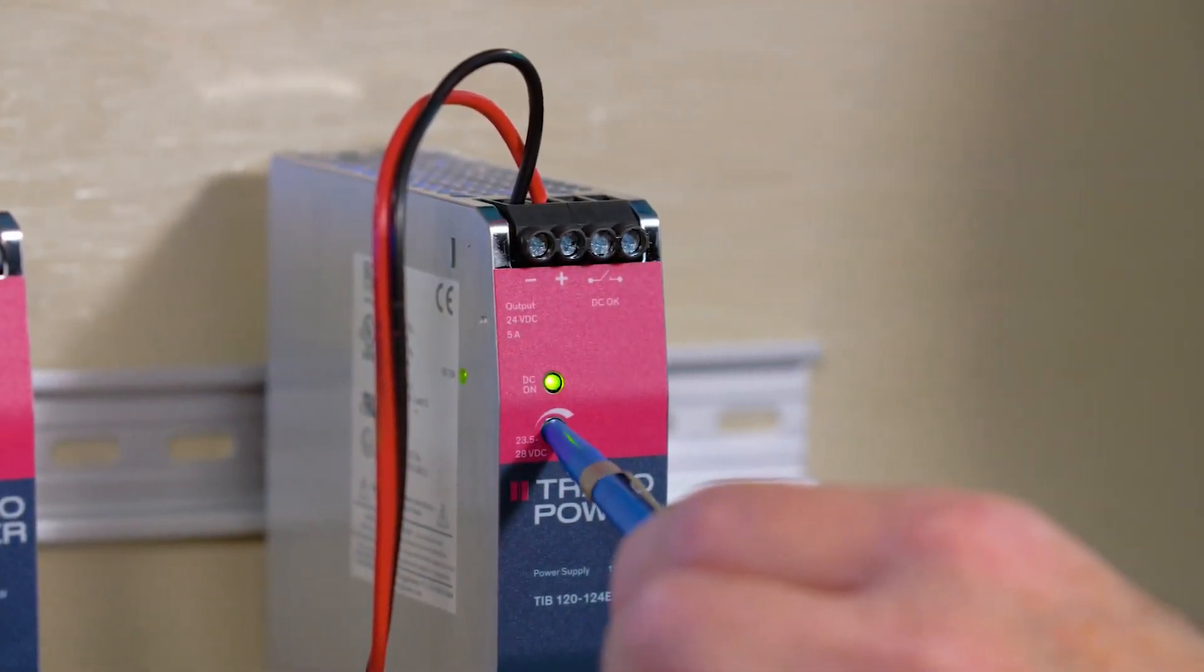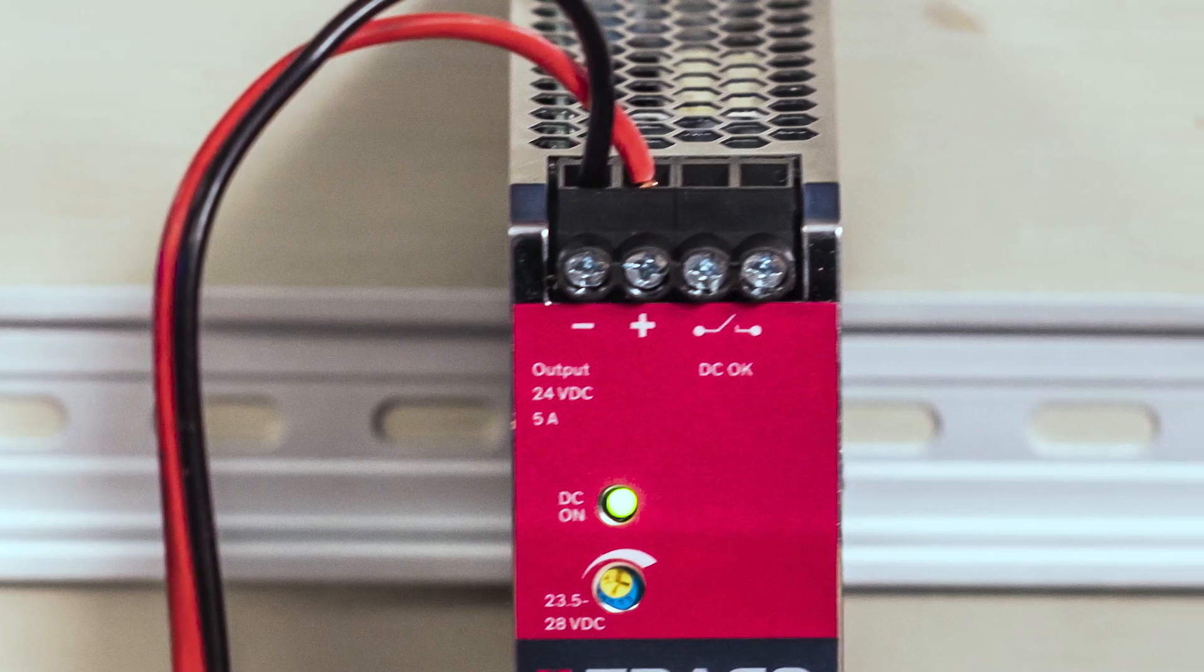Also on the top are two terminals that provide relay output that close when the output is energized. It's meant to be used to enable a remote indication that the supply output is powered up. These supplies are energy efficient.